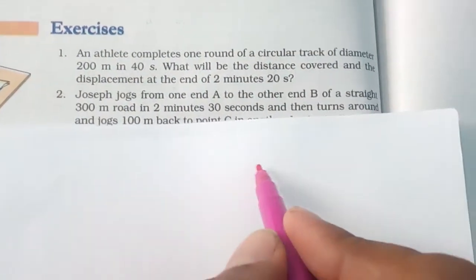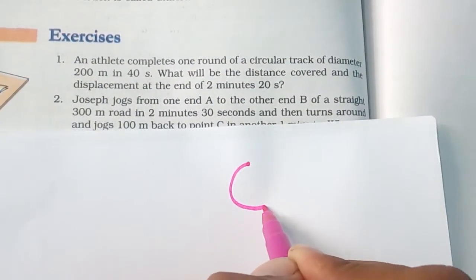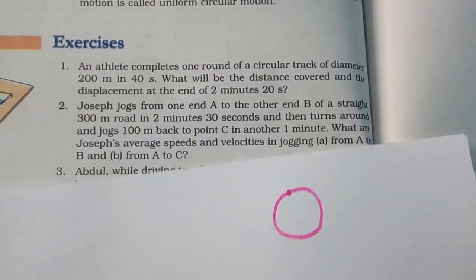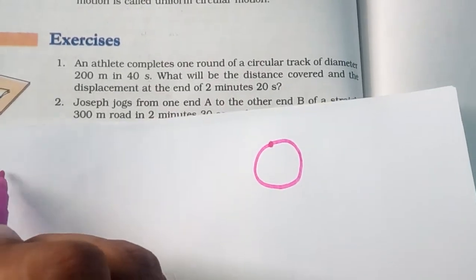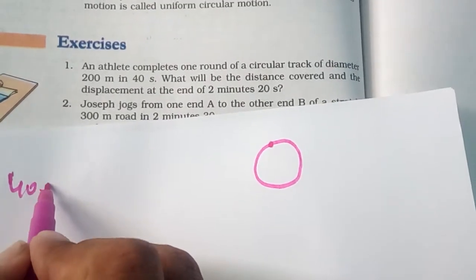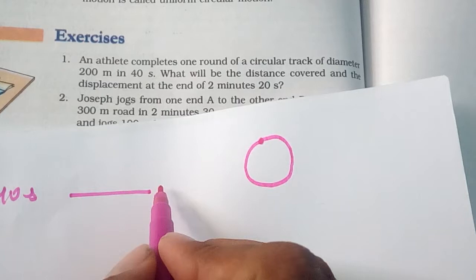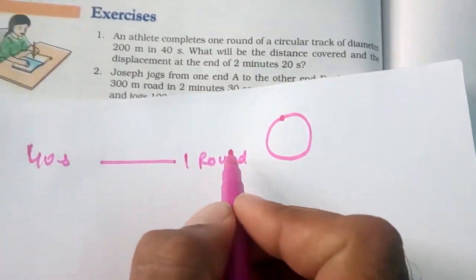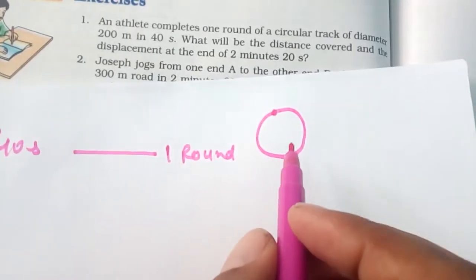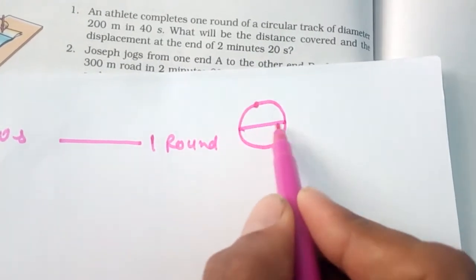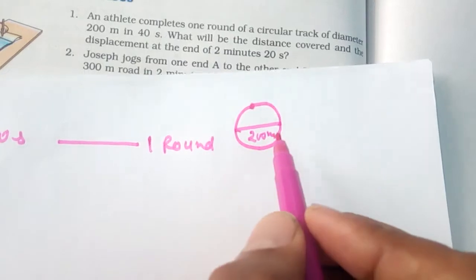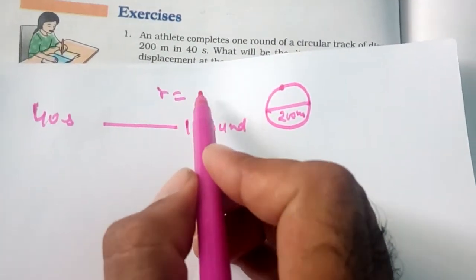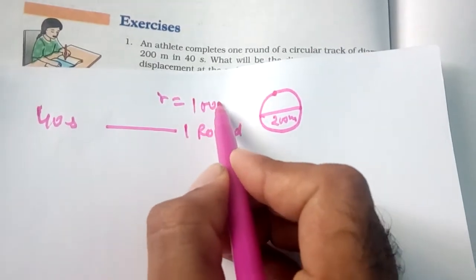The athlete completes one round of a circular track of diameter 200 meters in 40 seconds. One round of a circle is covered, and the diameter is 200 meters. So the radius will be half of the diameter, which becomes 100 meters.